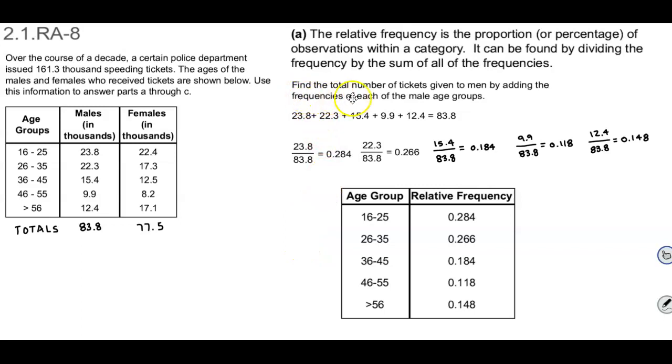So the first thing we want to do is find the total number of tickets given to men by adding the frequencies of each of the male age groups. So we're adding these all up to get 83.8. And then for each particular age group we're going to take the amount of tickets and divide it by the total. So 23.8 which represents the age group of 16 to 25, divide that by 83.8 gives us a relative frequency or proportion 0.284.